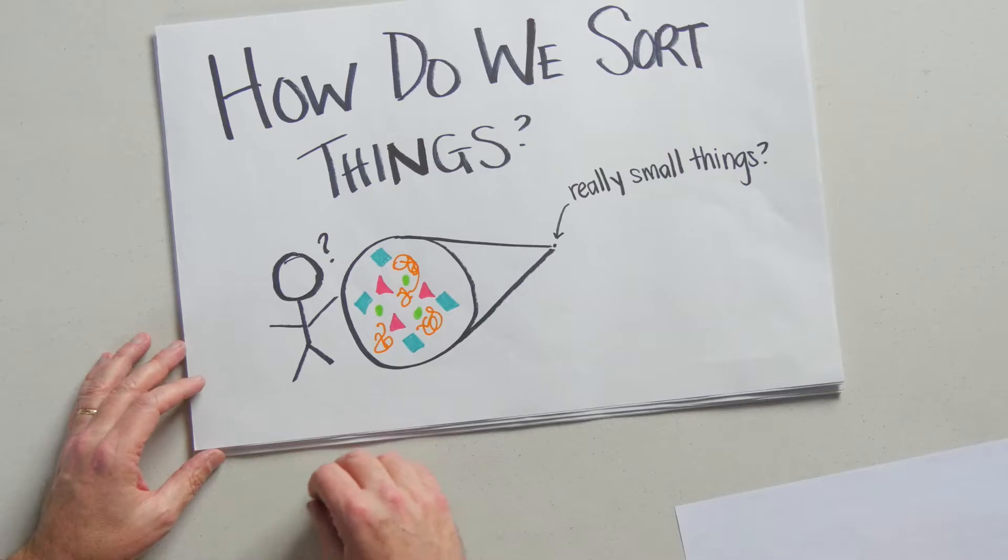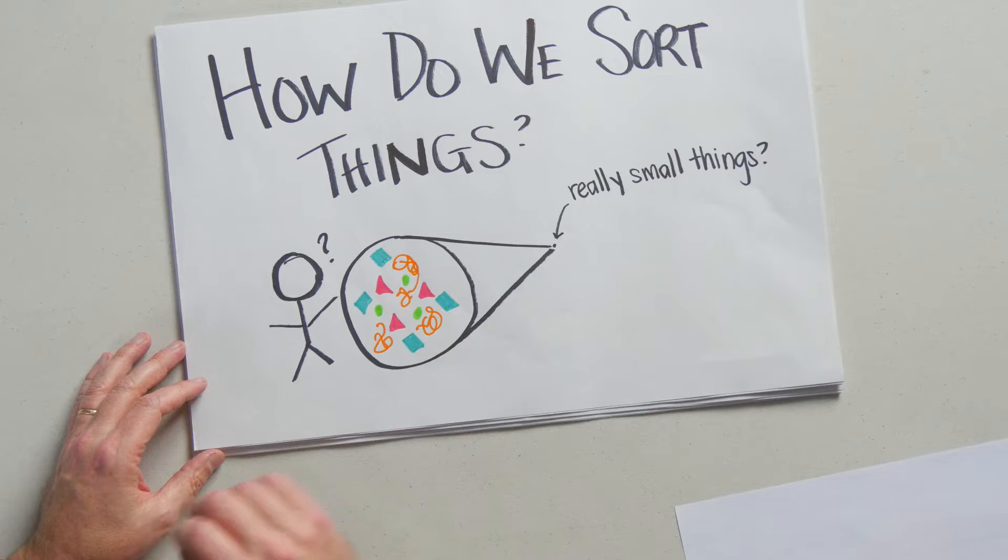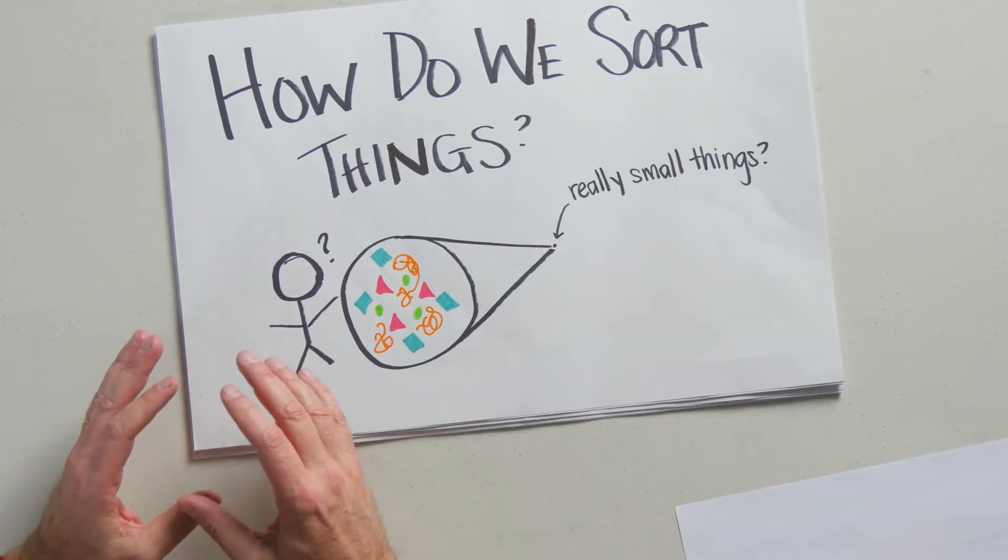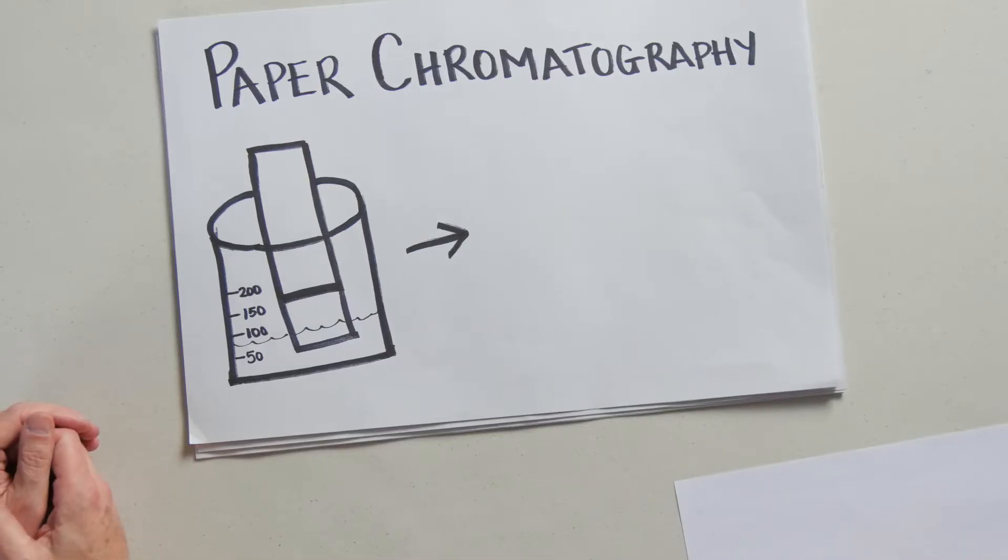So when we look at a cell, a cell is composed of all types of different macromolecules. We've got proteins and DNA and sugars, and what we need to do is pull the proteins out from this big mixture of stuff. So we're not talking about laundry, we're talking about really, really small things.